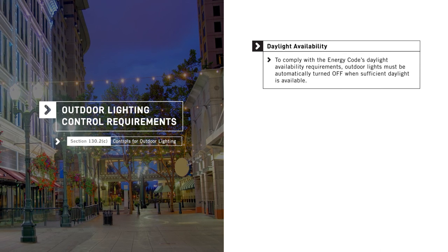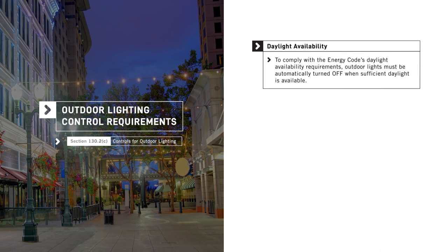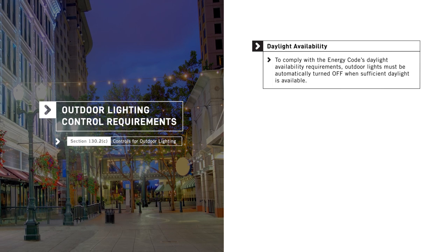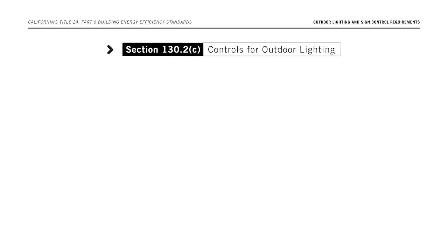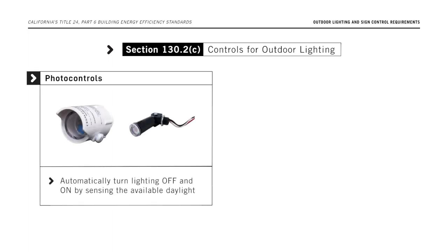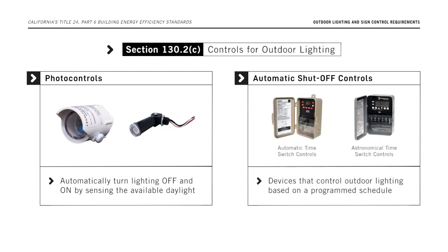To comply with the Energy Code's Daylight Availability Requirements, outdoor lights must be automatically turned off when sufficient daylight is available. Two types of lighting controls meet this requirement: one, a photo control, which automatically turns lighting off and on by sensing the available daylight; and two, an automatic shut-off control, which controls outdoor lighting based on a programmed schedule. One type of automatic shut-off control, called an astronomical time switch, includes a feature that adjusts the programmed schedule according to local sunrise and sunset times.